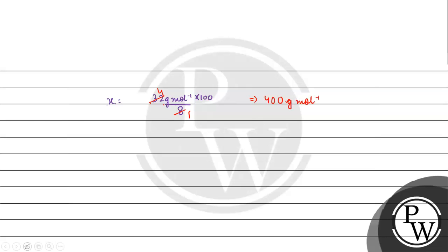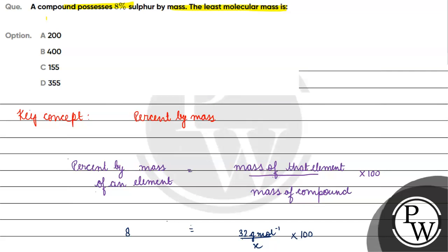So the minimum molecular mass of this compound should be 400 grams per mole. Option B will be the correct answer for this question. I hope you understood it well. Thank you and all the best.